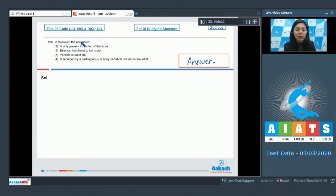Question 156: In doliolum, the notochord is only present in the tail of the larva, extends from head to tail region, persists in adult life, or is replaced by a cartilaginous or bony vertebral column in the adult.